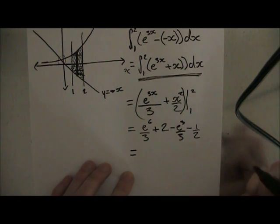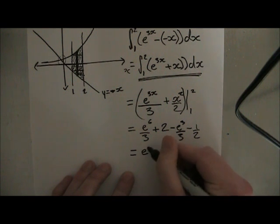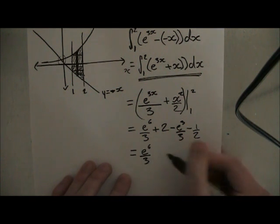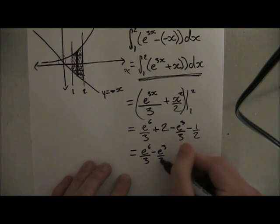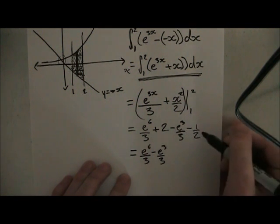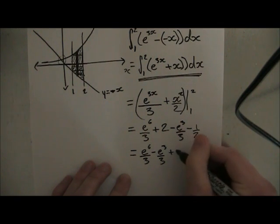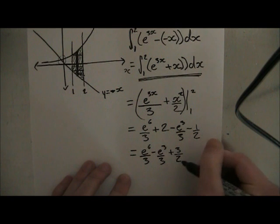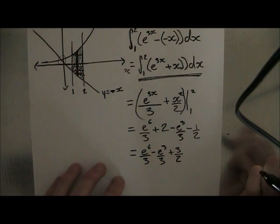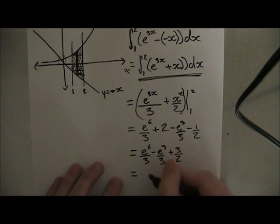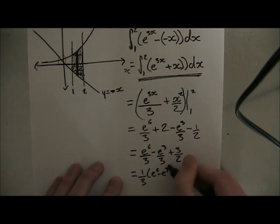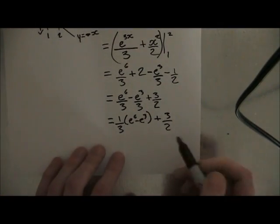And we get e to the 6 over 3 minus e to the 3 over 3 plus 2 minus 1 half. So that's going to give us 1.5. And 1.5 is the same thing as 3 over 2, right? And then what we can do is we can just take out this 3 if you really want. It doesn't really matter. 1 over 3 times e to the 6 minus e to the 3 plus 3 halves. And that's going to be your final answer.